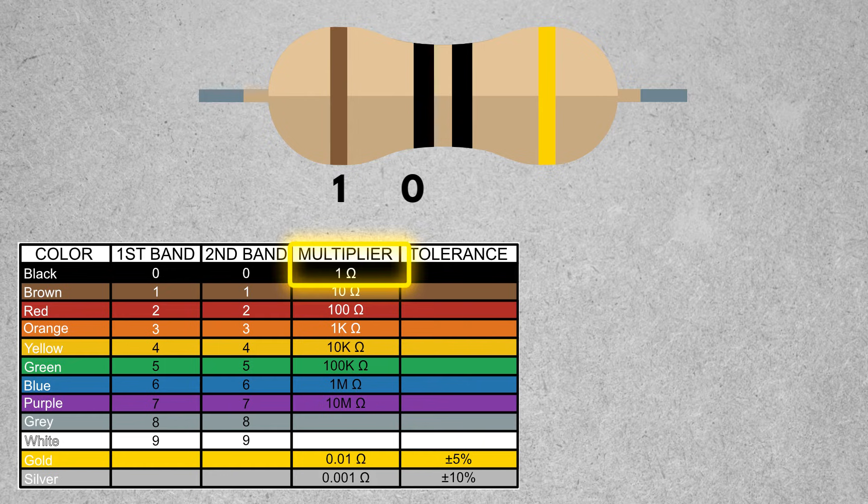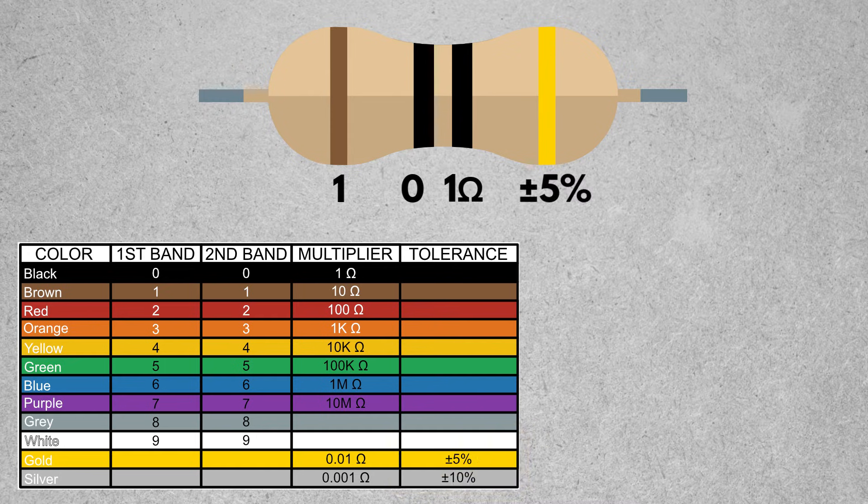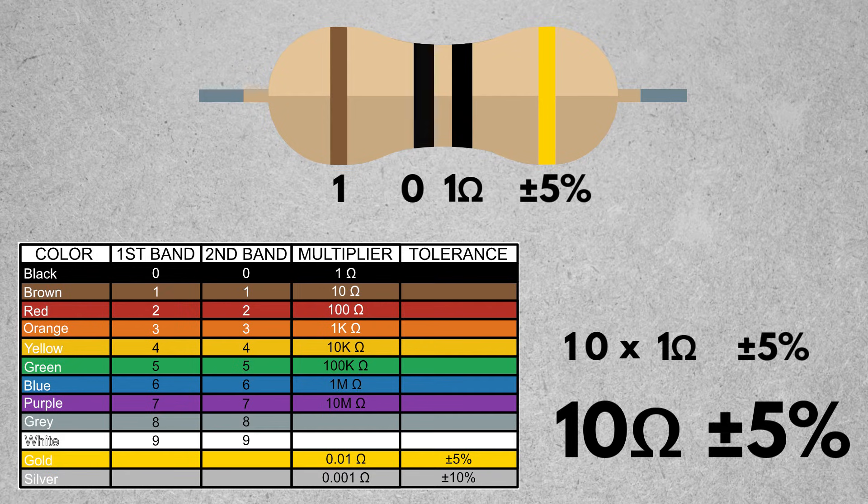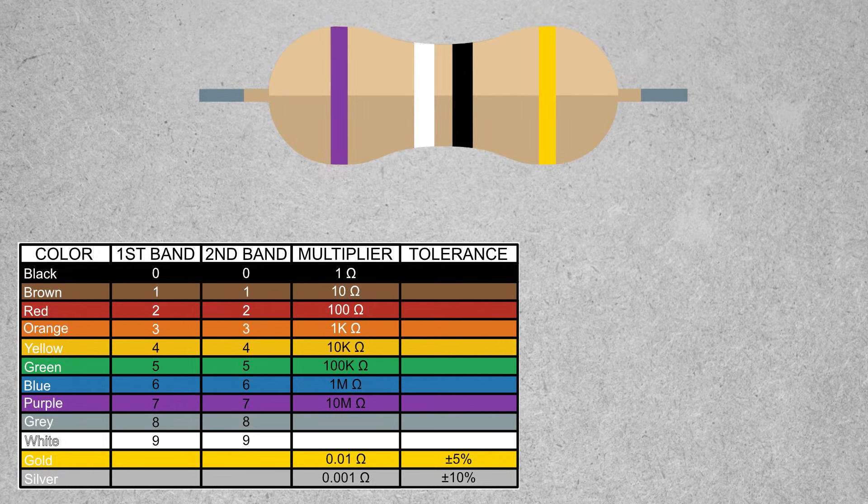The third number is black, which gives us a multiplier of 1 ohm. And then finally gold is giving us a tolerance of plus or minus 5%. When we combine numbers, we get 10 times 1, so it gives us 10 ohms, and plus or minus 5%. Let's go on to another example.